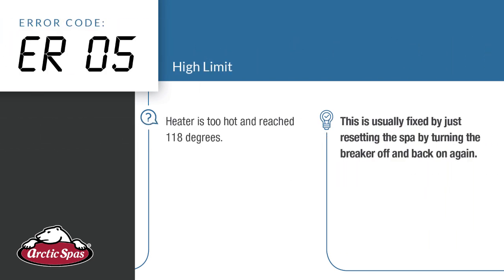ER05 — high limit. The heater is too hot and has reached 118 degrees. This is usually fixed by just resetting the spa by turning the breaker off and back on again.